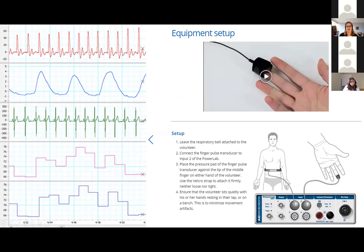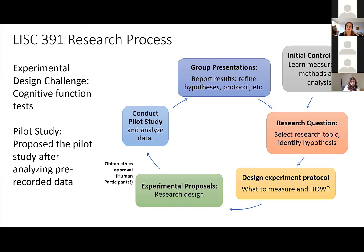This all allowed us to accomplish our major learning outcomes for the different parts of the course, and we were still able to walk them through the research process they would have been doing live. For our experimental design challenge, we gave them a larger window rather than a single two-hour session. They were able to look at cognitive function changes with questions and design experiments — like, does the left eye have a better reaction time than the right eye, or do you have better reaction times with different cognitive tests in a quiet versus a noisy place? They were then able to analyze prerecorded data for their pilot study, and I described how they would have run the pilot study itself rather than being able to do it in person.